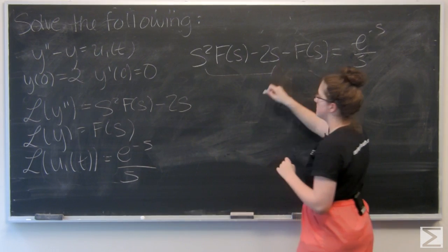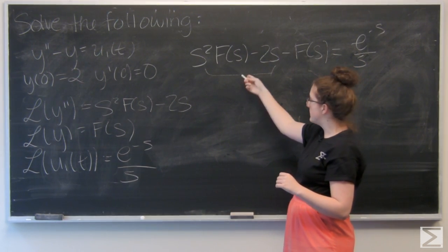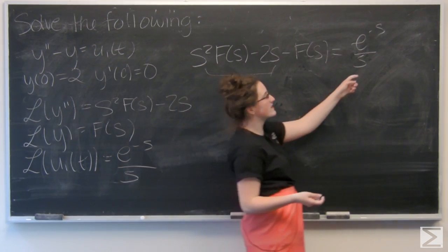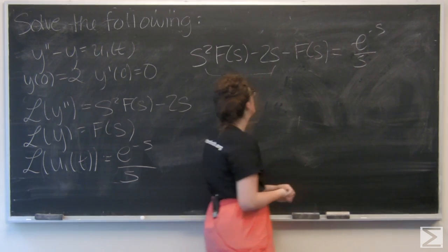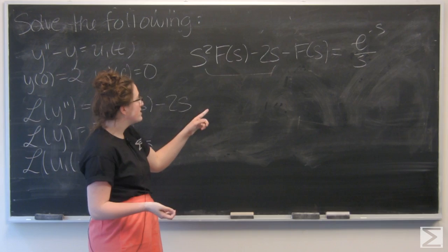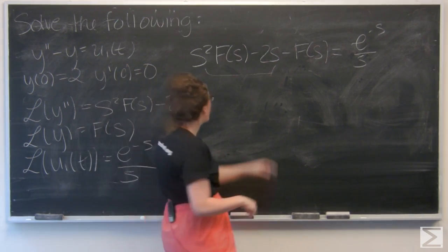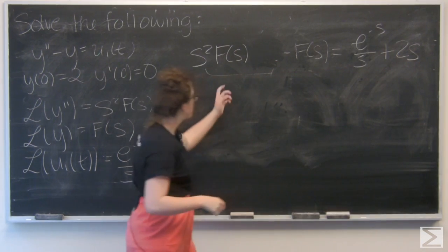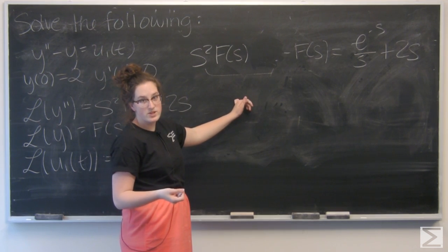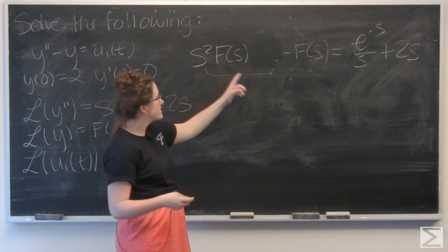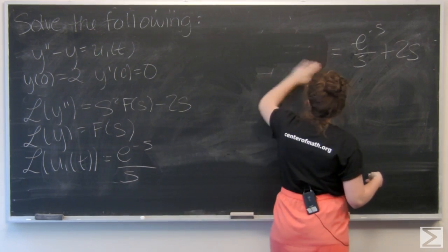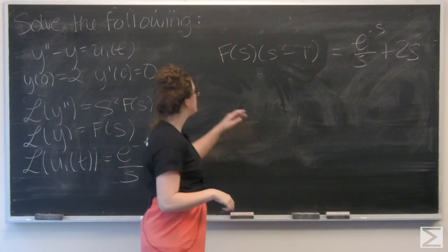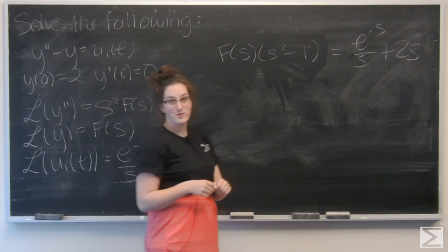Now let's put all these things back into the original equation. I have the Laplace transform of y double prime, s squared F of s minus 2s, minus the Laplace transform of y, F of s, equals e to the negative s over s. Now I need to solve for F of s. I'm going to add 2s to both sides, then factor out F of s to get F of s times s squared minus 1. Then I divide both sides by s squared minus 1.